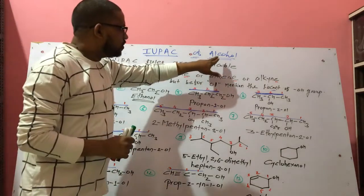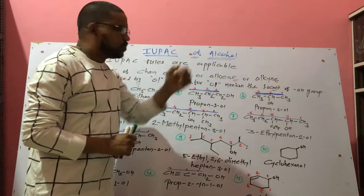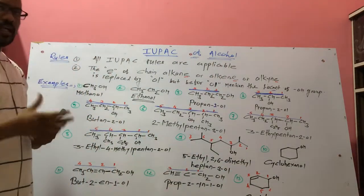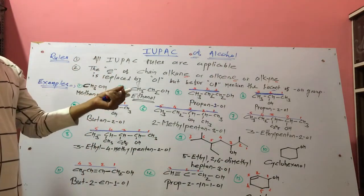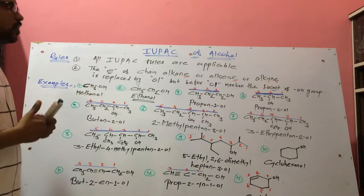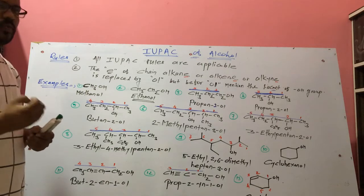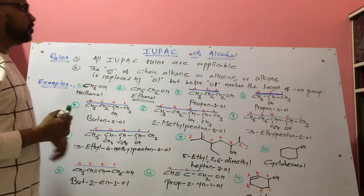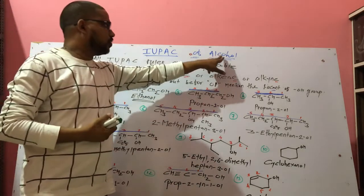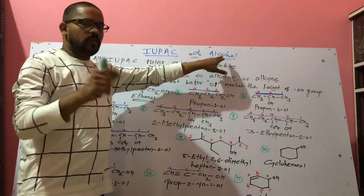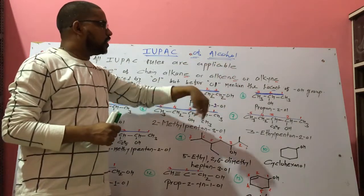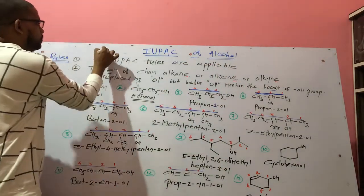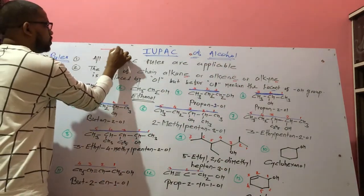Now, what is alcohol? Alcohol means any aliphatic compound — a long-chain compound — which contains OH as a functional group is called an alcohol. So alcohol means an aliphatic compound which contains an OH group.